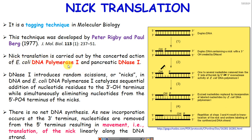There are two main enzyme workhorses of this technique: DNA polymerase I and DNase I. A concerted action of DNase I and DNA polymerase I is required for nick translation. The action of both enzymes on duplexed DNA begins with DNase I creating nicks in the double-stranded DNA.